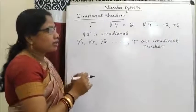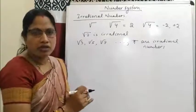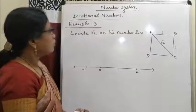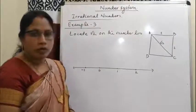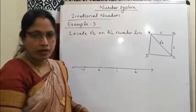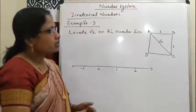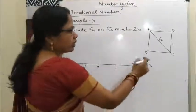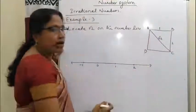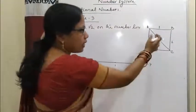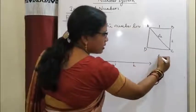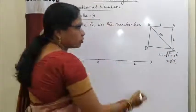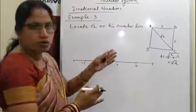Next example: locate √2 on the number line. Root 2 was first discovered by Pythagoras. Perhaps they derived it this way: ABCD is a square with side 1 unit. By using the Pythagorean theorem, the diagonal is √(1² + 1²) = √2. So they might have discovered √2 in this way.